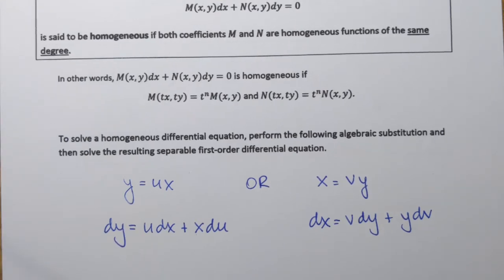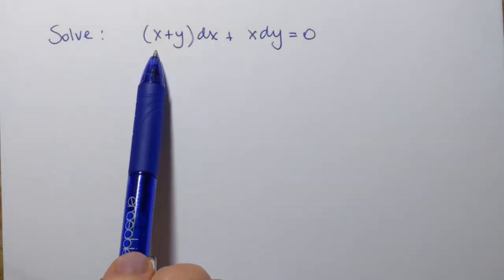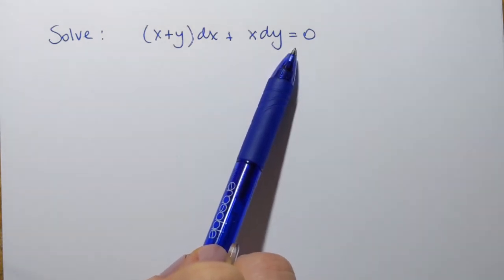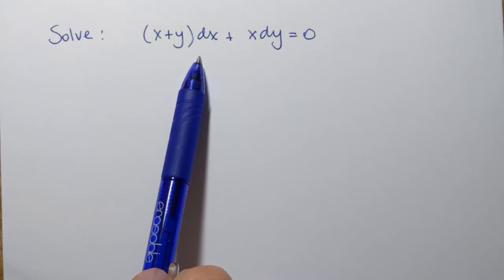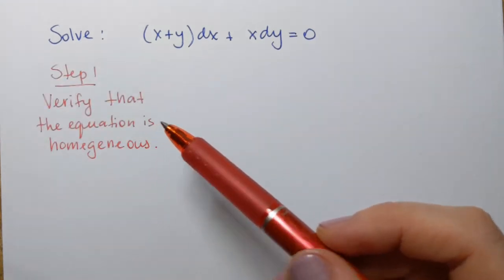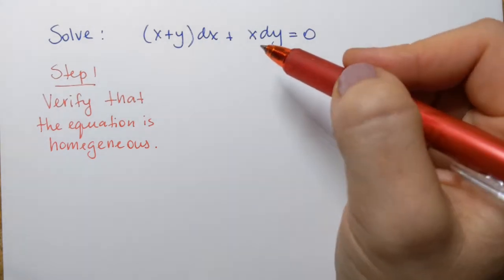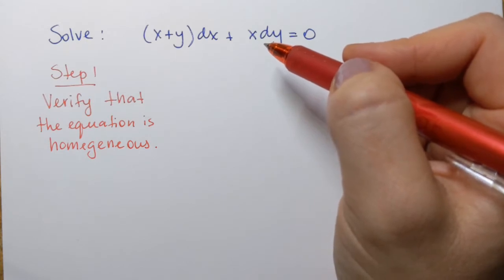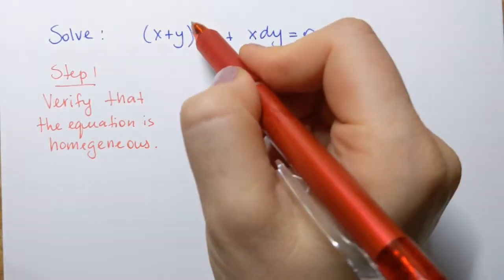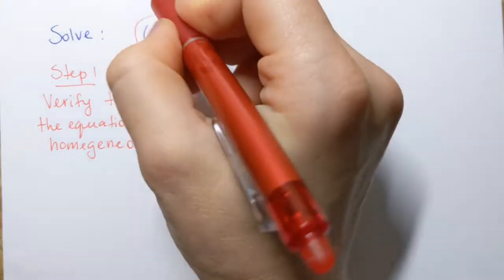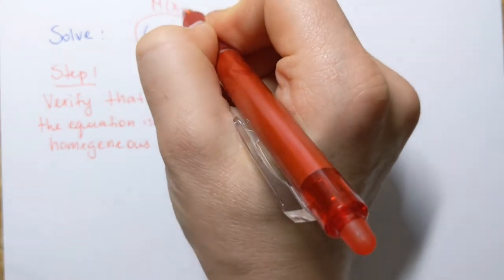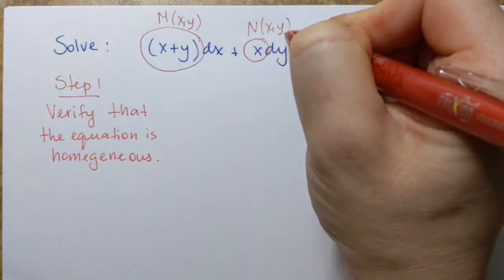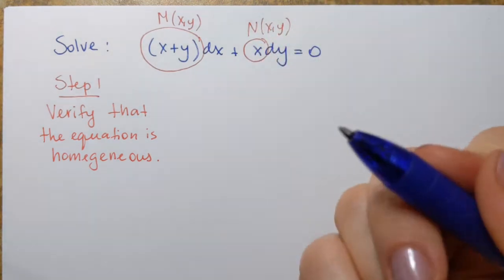So let's try doing an example. We need to solve the following equation: (x + y) dx + x dy = 0. We start by checking if this is a homogeneous first-order differential equation. For that we need to recall that a differential equation is homogeneous if the coefficients are homogeneous functions of the same degree. The coefficients of this equation will be x + y, which in our definition is called function M of x,y, and the second coefficient x, which is function N of x,y. Let's check whether they're homogeneous and find their degrees.